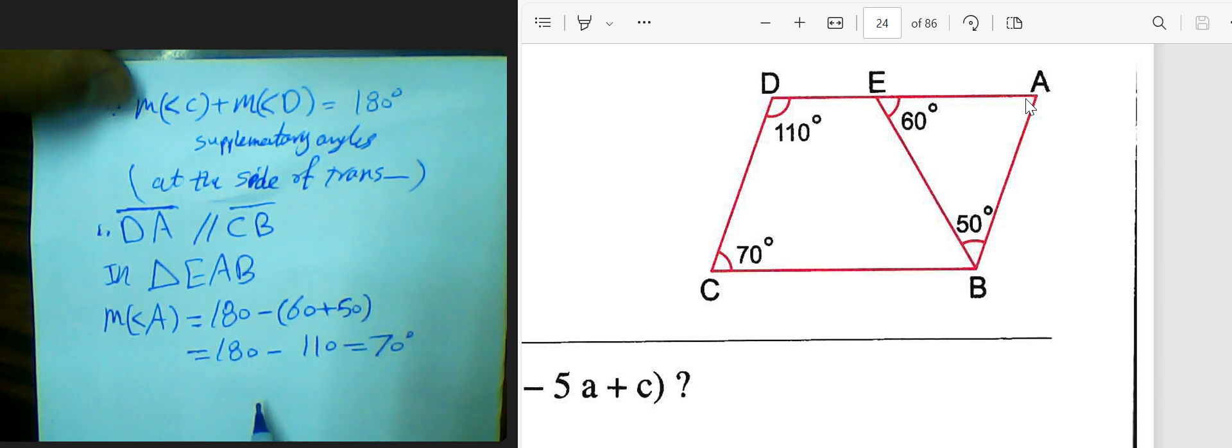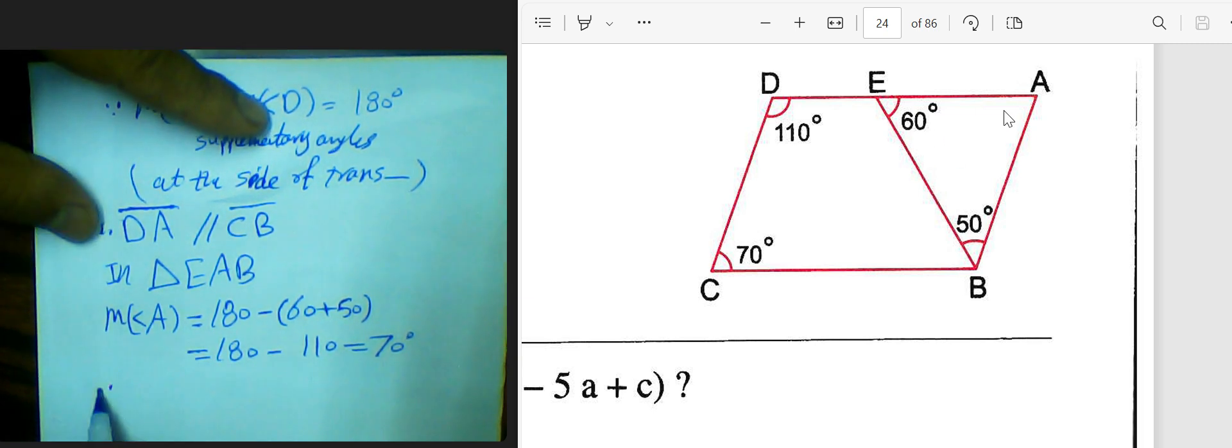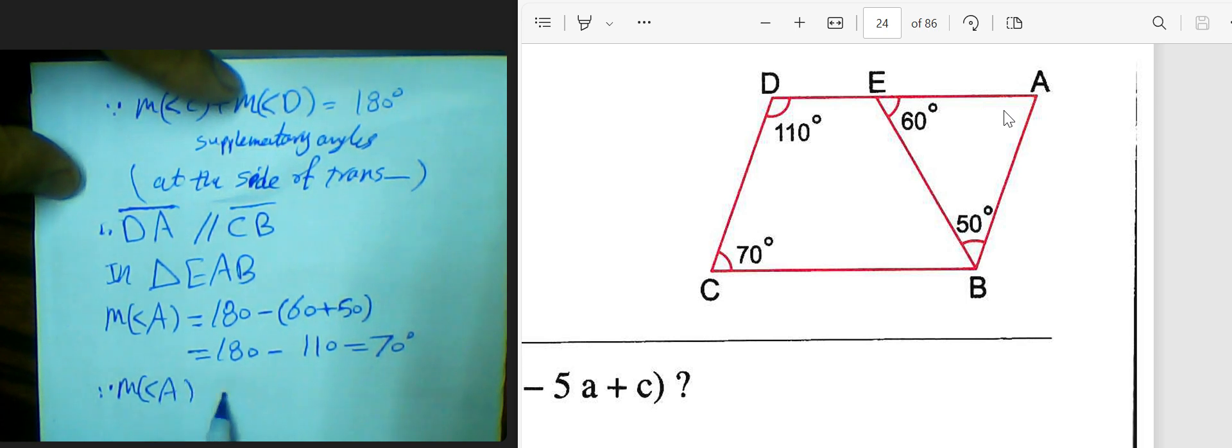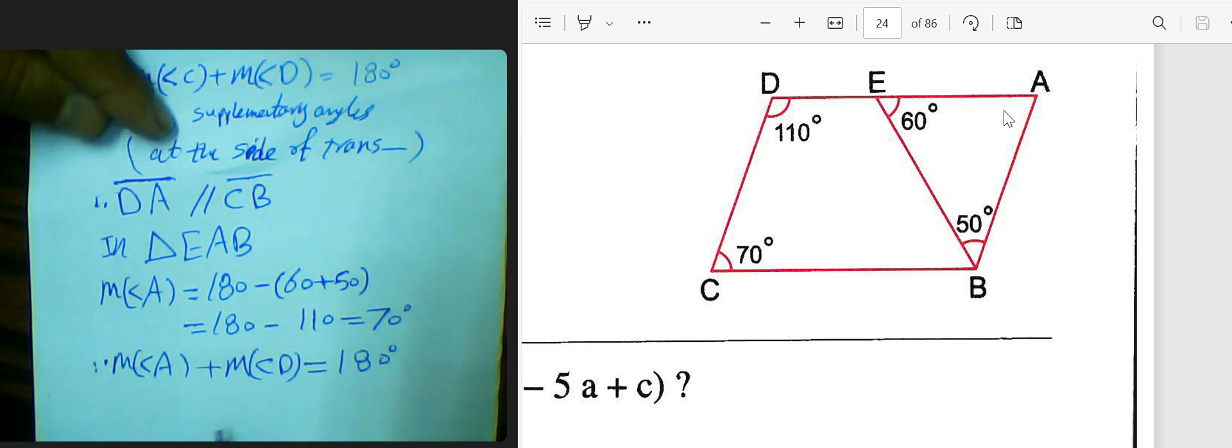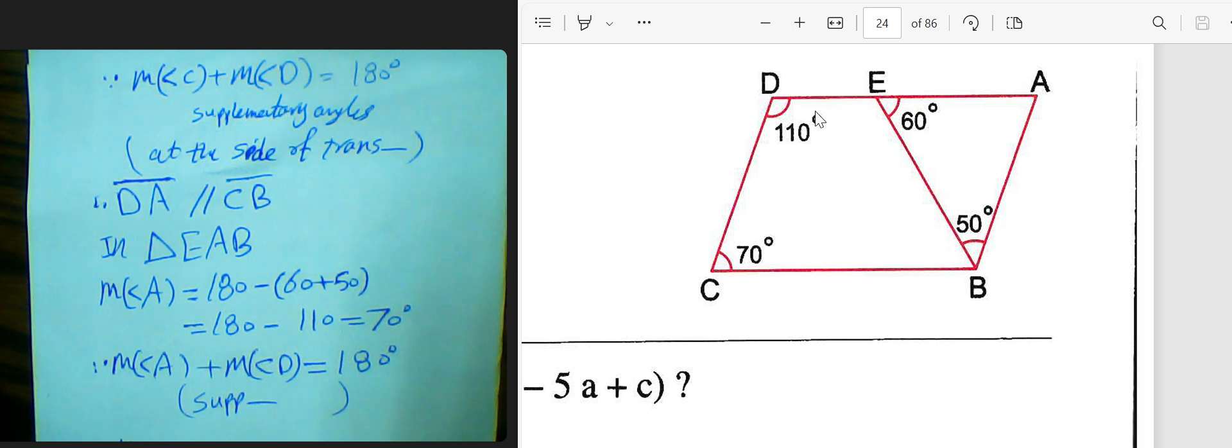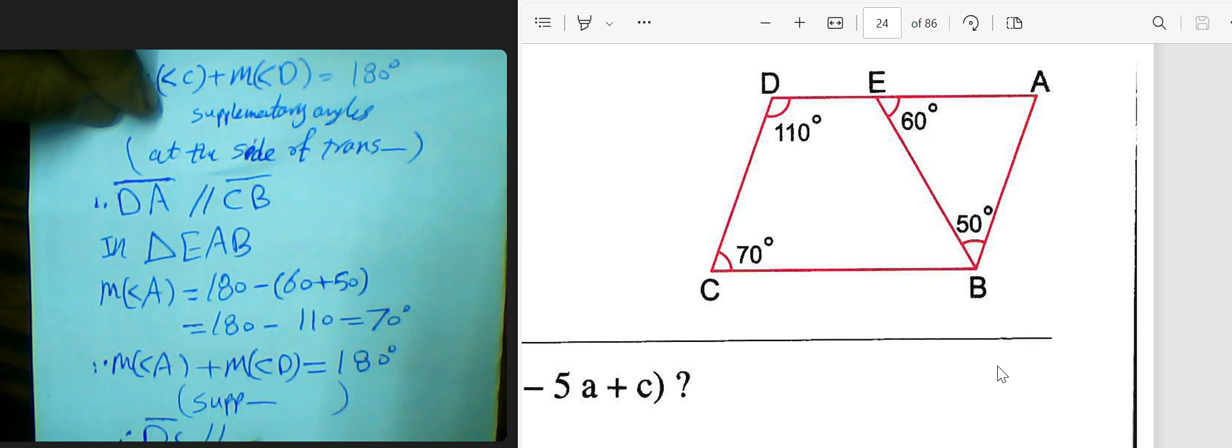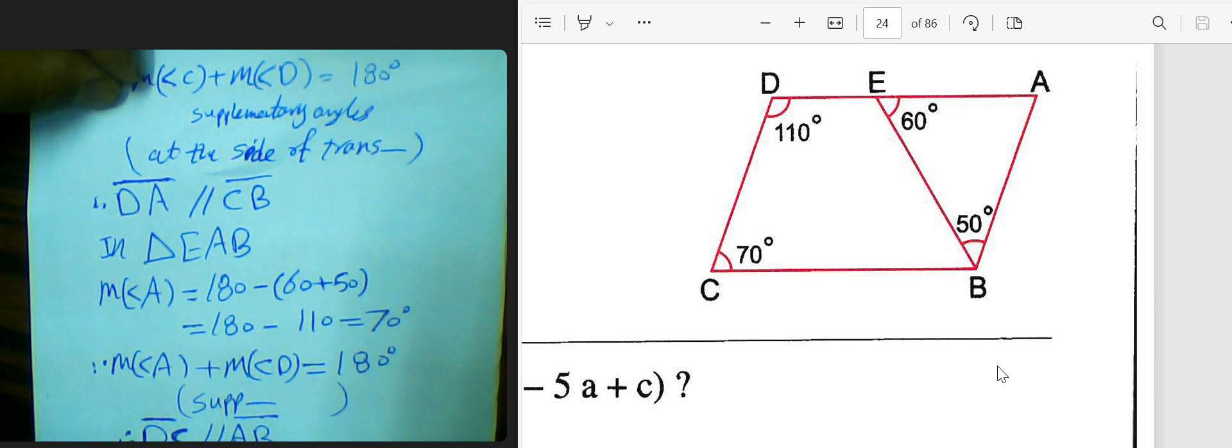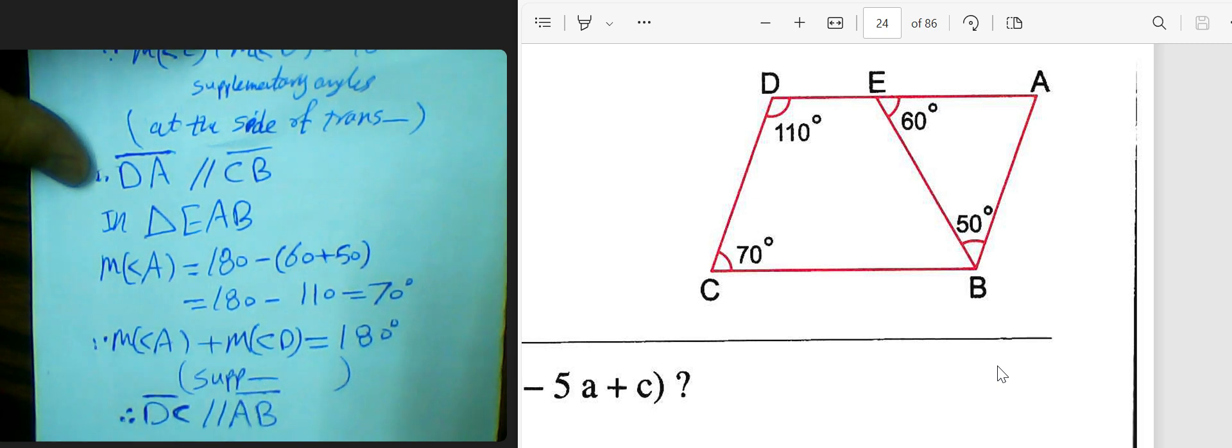An instant is another: 70 when you combine it, 180. Measure of angle A plus measure of angle D equal 180 degrees, supplementary. Measure of angle A plus measure of angle D, supplementary on the same side of transversal. On the same side of transversal, they are supplementary.